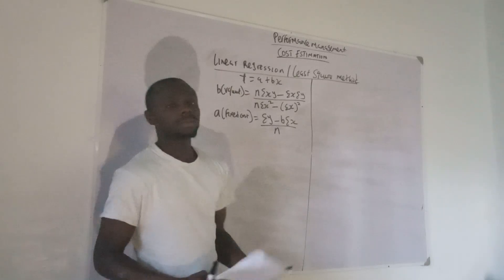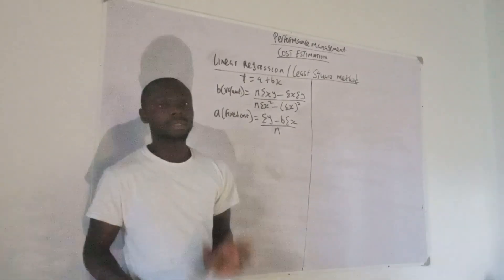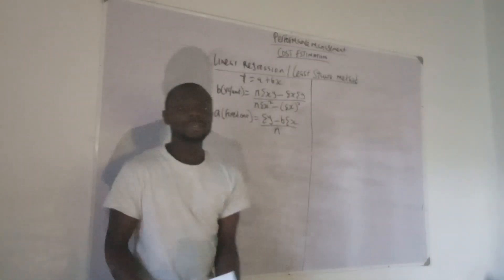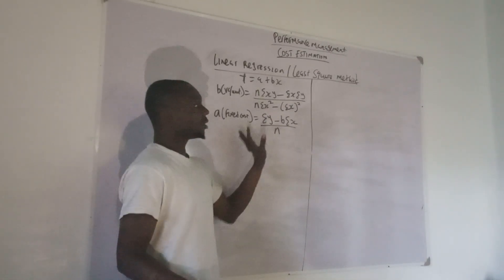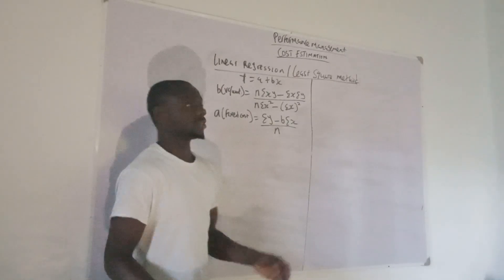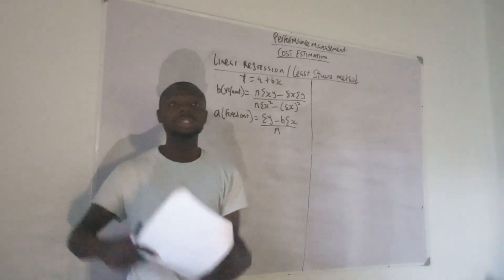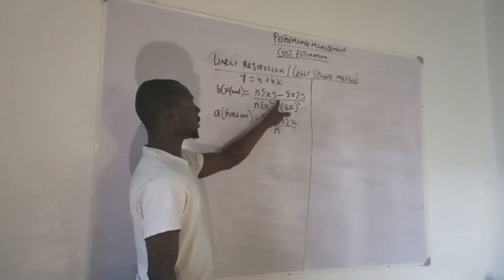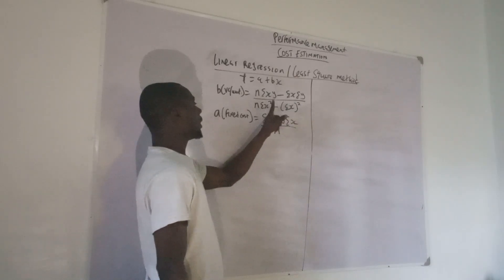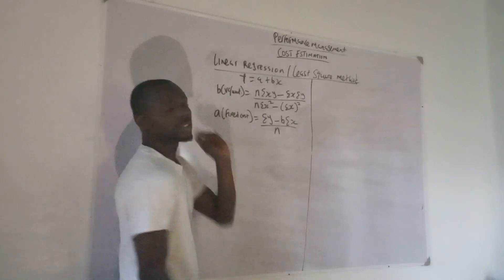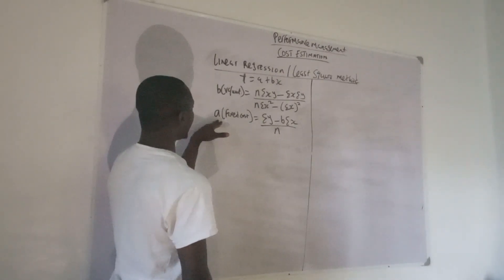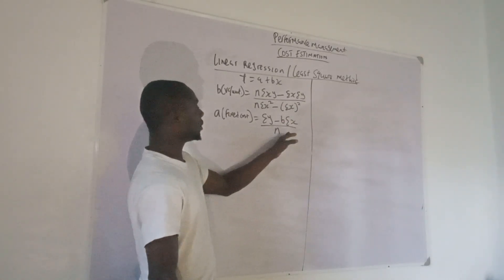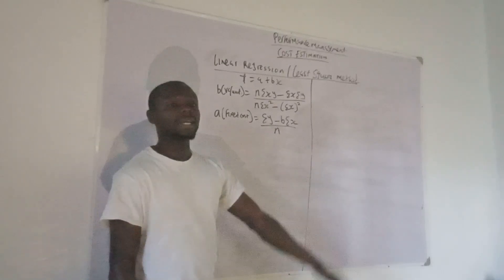Now for linear regression, I have a question here. You can see on the board the cost function and the formula for calculating b. Luckily for you, this will be given at the back of your question paper, but you need to know it as well. b equals n times summation of xy, minus summation of x times summation of y, over n times summation of x squared minus summation of x squared. b is the variable cost per unit. While a, the fixed cost, equals summation of y minus b times summation of x, divided by n, where n is the number of observations.